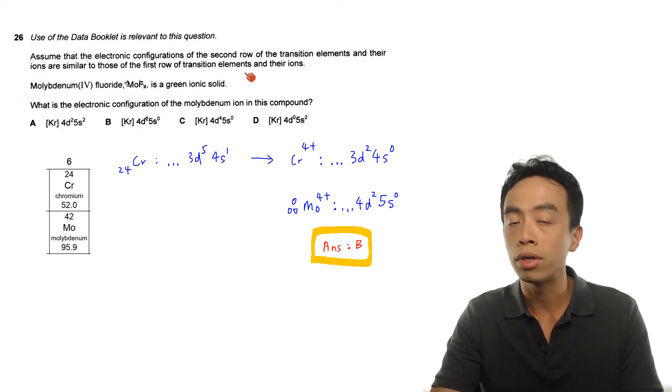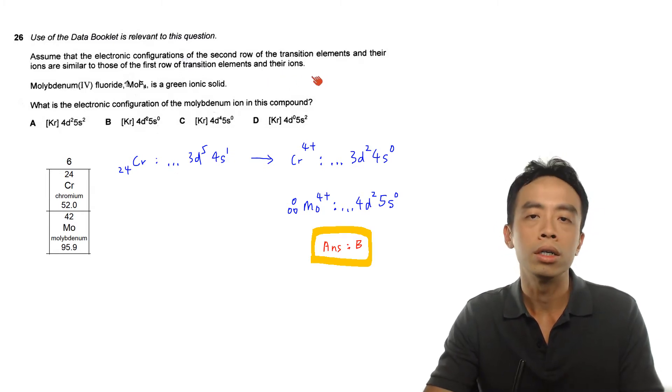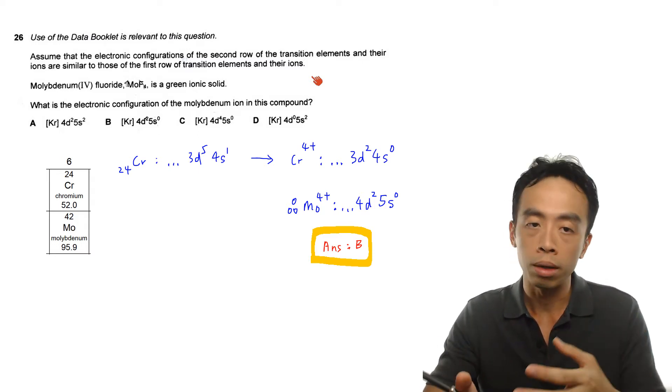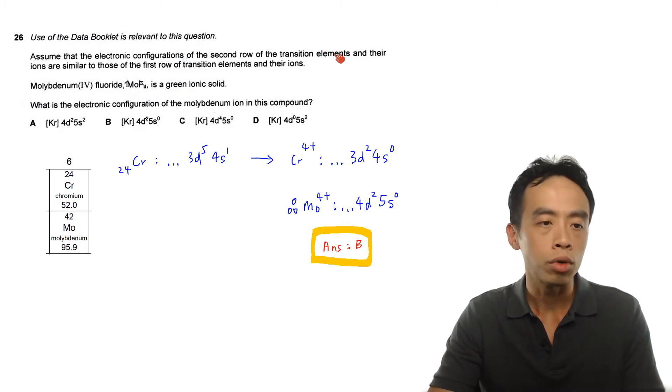So the first row of transition elements and their ions is in Citibus. What we are doing is applying what we have learned for the first row of transition elements and then we apply this to the second row of transition elements in this question.